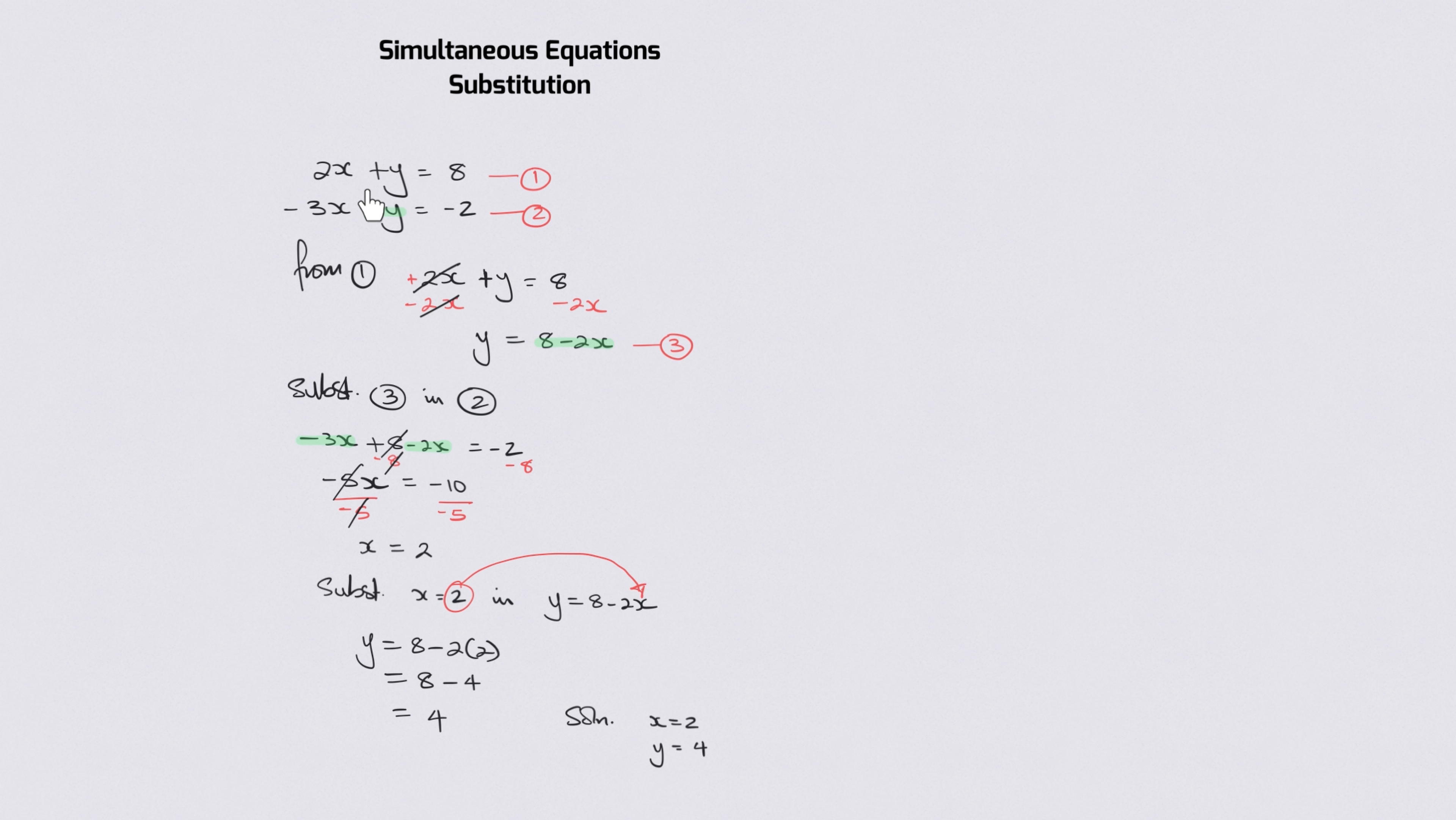So I'm going to choose this first equation here. I'm going to change color because this is just a test. So we're just going to test that x is indeed 2 and y is indeed 4. And we're going to substitute it into 2x plus y equals 8. That means I'm going to replace this x for 2 and I'm going to replace this y for 4.